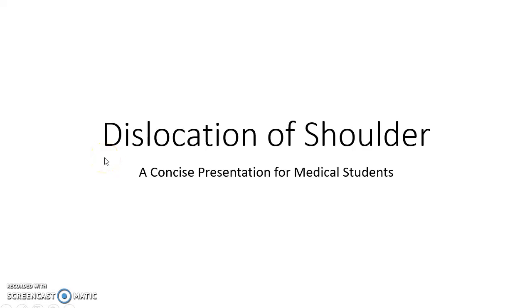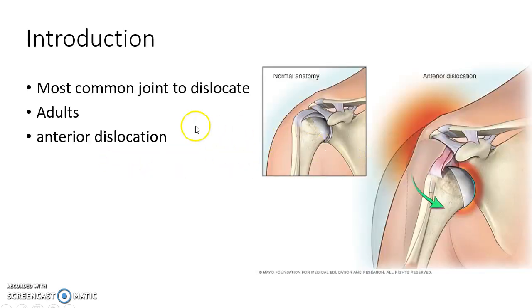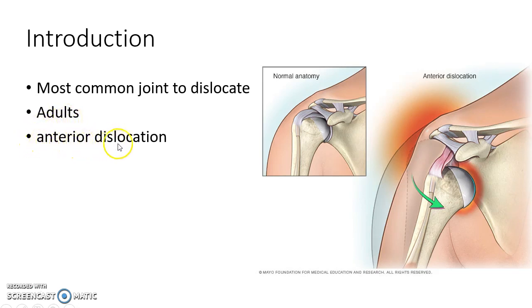Hello, this is Cynthia Medico and in this video we are going to see about dislocation of the shoulder. The shoulder joint is the most common joint to dislocate, and it is more common in adults compared to children. Anterior dislocation is the most common type of shoulder dislocation.